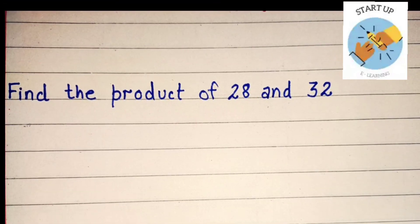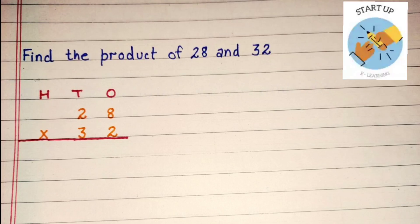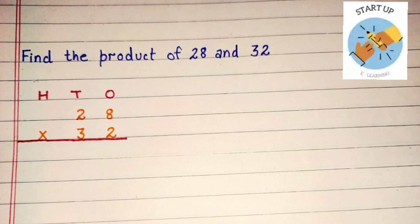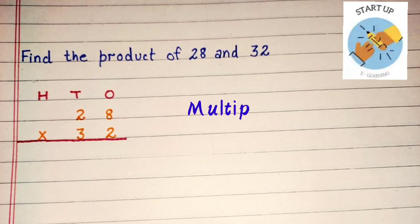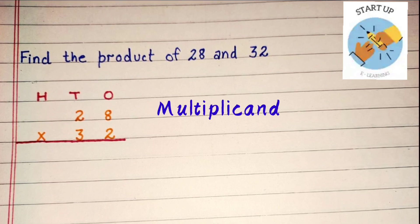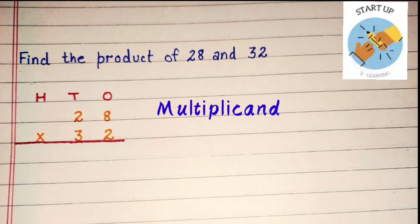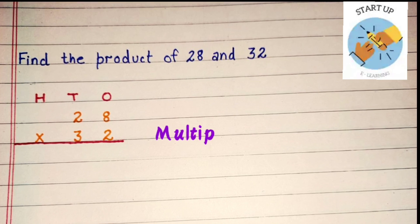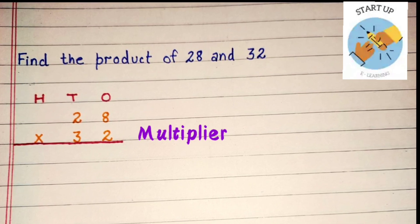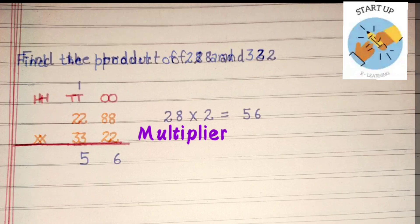Let's find the product of 28 and 32. First of all, we need to arrange it according to its places. So, 8 will be written under 1's and 2 will be written under 10's, and 28 is the multiplicand here. For 32, 2 will be written under 1's place and 3 will be written under 10's place, and it is the multiplier here.